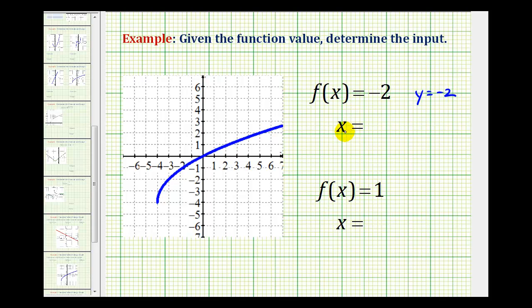We want to know what x would have to be, or what the input would have to be. So if we go over to our graph and locate y equals negative two, which is here, and go over to our function, we can see what x would have to be. We can see that x would have to be negative three if y is equal to negative two.